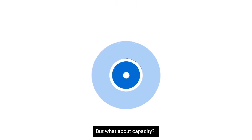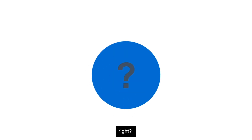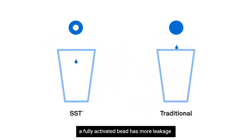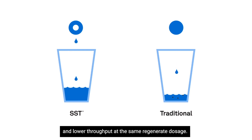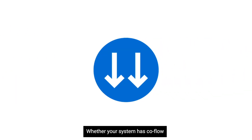But what about capacity? Logically, a bead with more active sites must have more capacity, right? Actually, no. Compared to SST, a fully activated bead has more leakage and lower throughput at the same regenerate dosage.